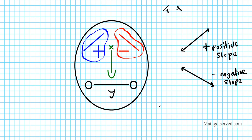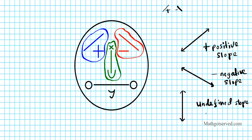Now how about the green component — the nose — with the times sign, the line, and the u? A line going up and down is a vertical line. The u at the bottom of the nose means undefined. So if you have a line going up and down, it has an undefined slope. The x on top of the nose tells you the equation will be of the form x equals a, where a is wherever the line cuts the x-axis.